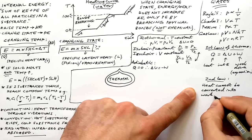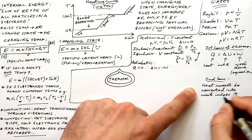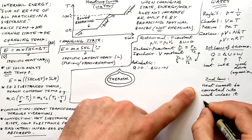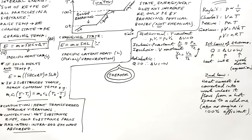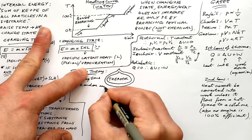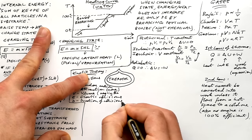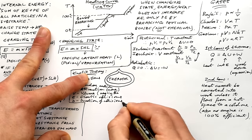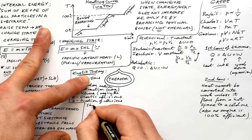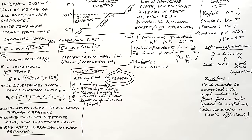The second law: heat cannot be converted into work unless it flows from a hot space to a cold space, meaning you're always going to get a change in temperature somewhere in the system, so no engine can be 100% efficient. Kinetic theory has five assumptions — RAVED: R is random motion of particles, A is attraction — there is none, V is volume of particles is negligible, E is elastic collisions, and D — duration of collisions is negligible compared to duration between collisions.